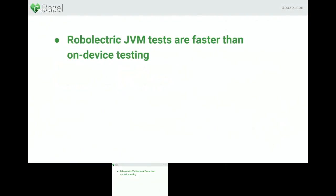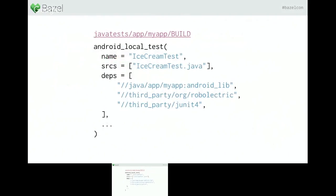Android Local Test works closely with a testing framework called Robolectric. Android apps run on your phone on a device, so generally you'd want to test your app on the device. However, this is often very slow, so Robolectric provides an alternative — it runs Android framework code directly inside the JVM on your computer, enabling you to run tests much faster than on a device in a similar environment to the one on your phone. Here's what an actual rule looks like: you have the test code in sources, and all your dependencies in deps, including the code you want to be testing.